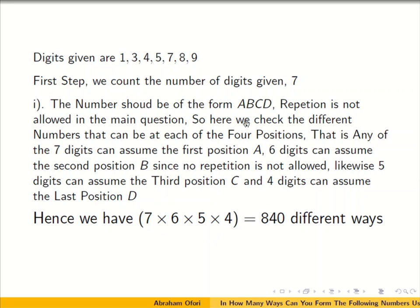So we have 7 × 6 × 5 × 4, and you multiply them together. That gives us 840 numbers that can be formed from the first condition — where no restriction is allowed. We are just following the question: there is no restriction.